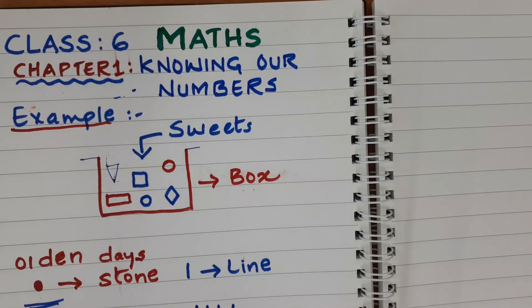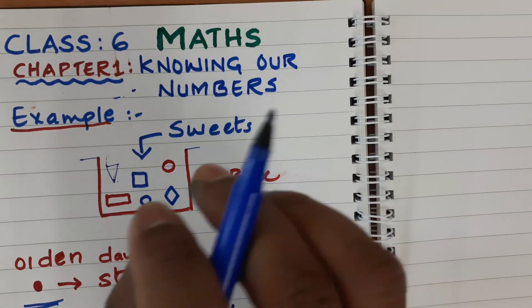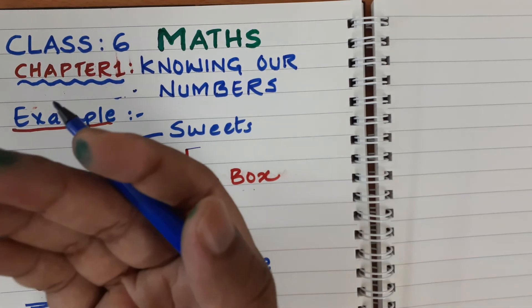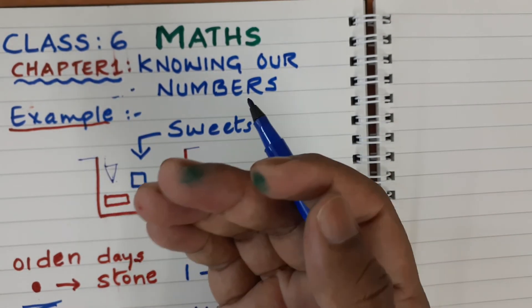In this chapter, we will learn about numbers - different numbers, comparing numbers, greatest and smallest numbers, large numbers.